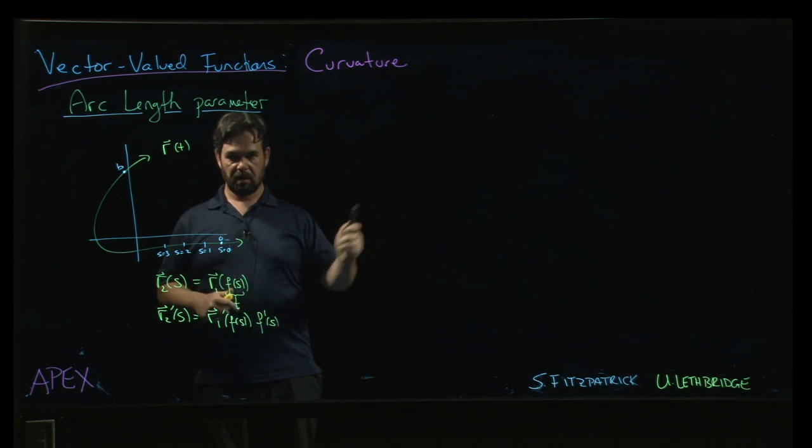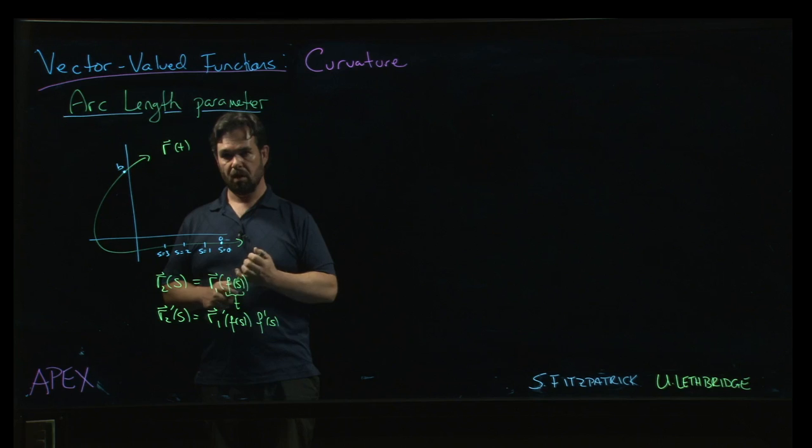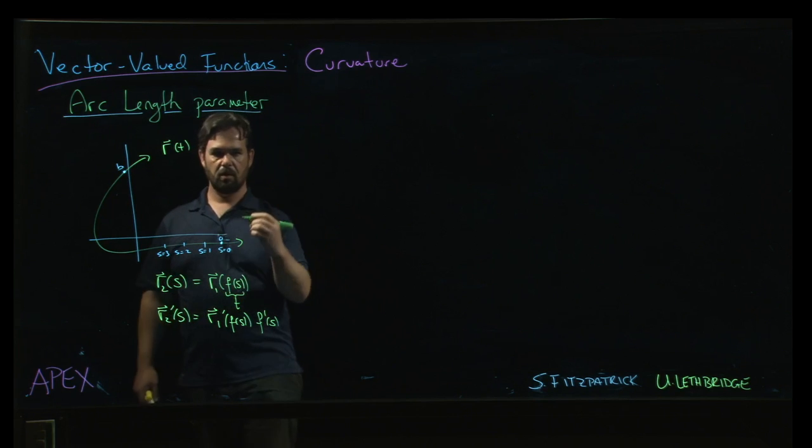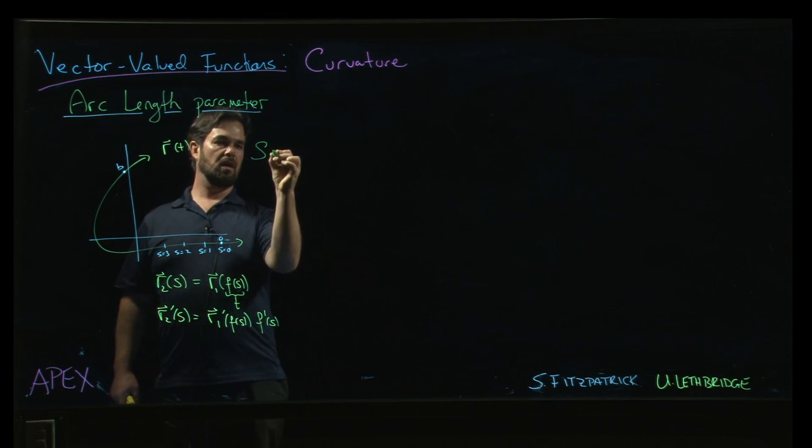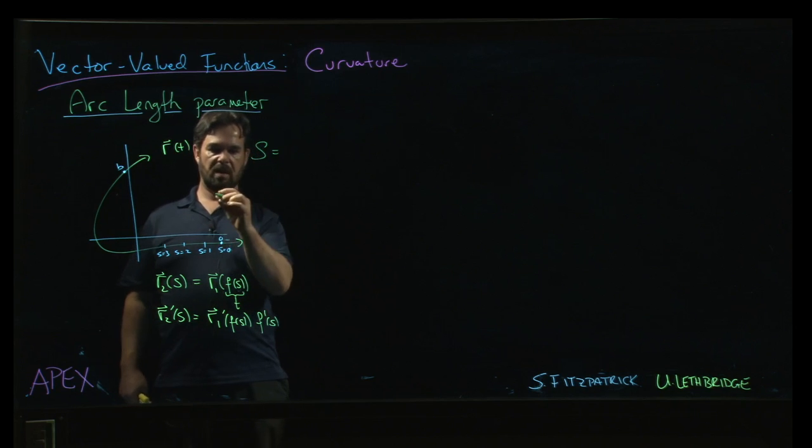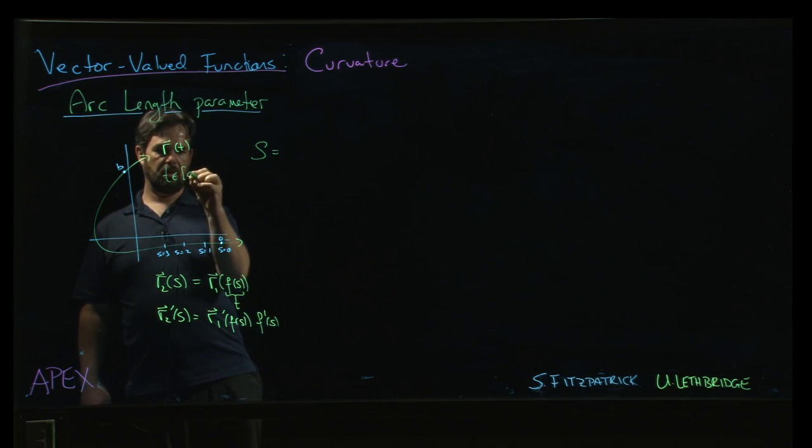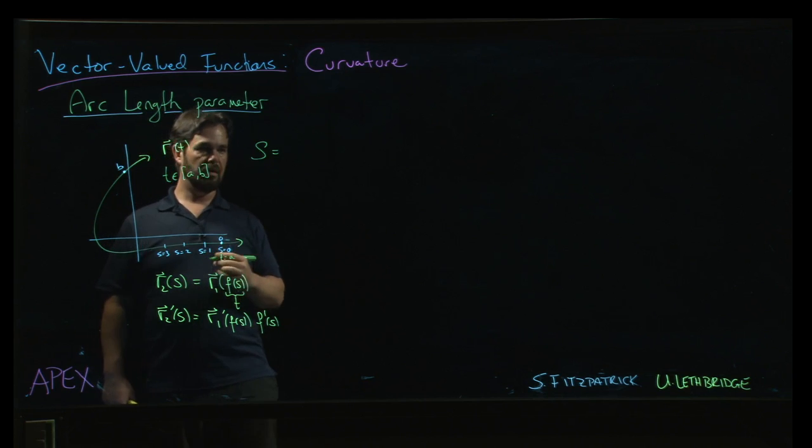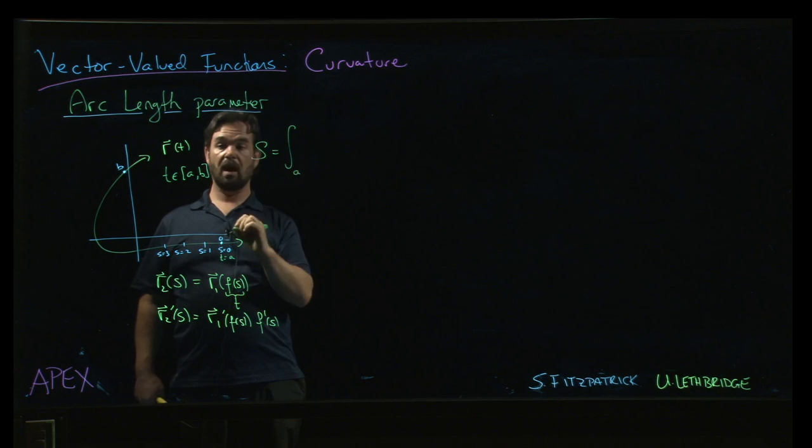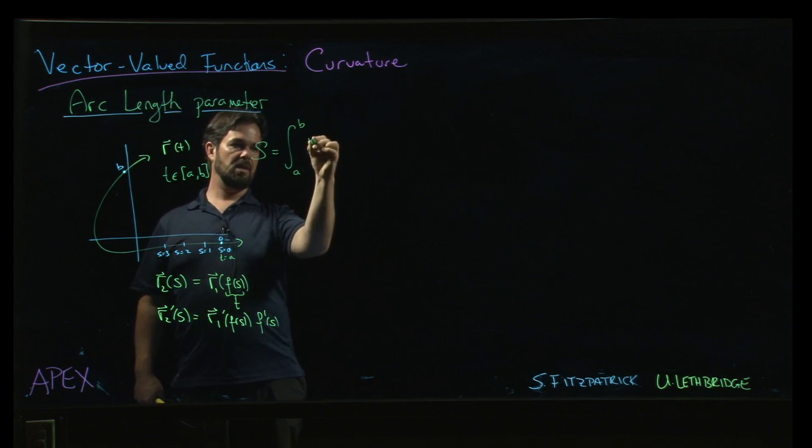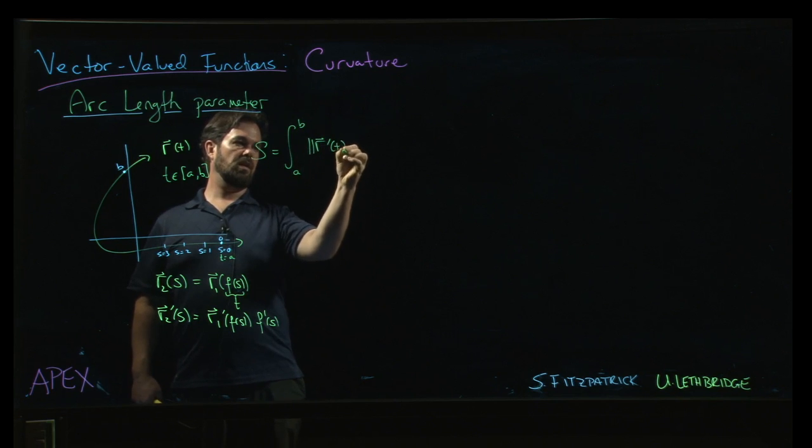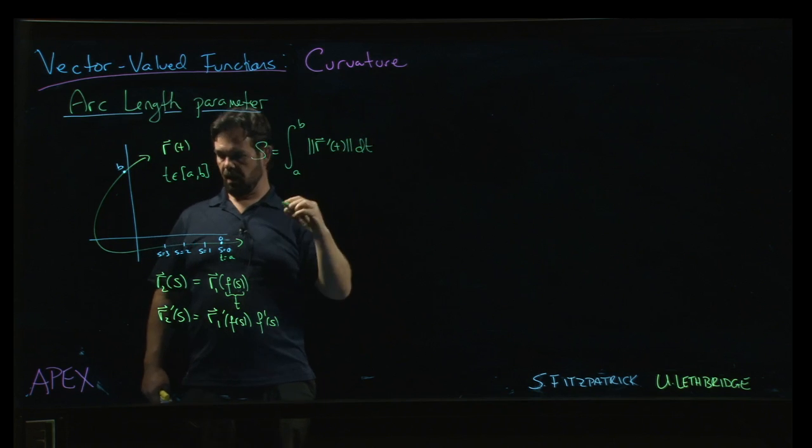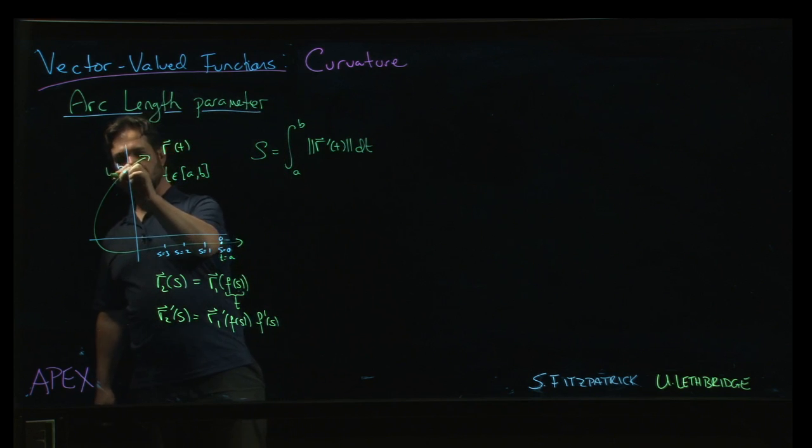First, we need to define it, then we'll look at an example, and then we'll confirm that it has these properties we want it to have. And so the idea is, we know that arc length, typically, if we have r of t and it's given on some—t is from a to b, so that s equals zero might correspond to t equals a. If we wanted the entire arc length, we'd say, okay, well, it's the integral from a to b, and we integrate the magnitude of r prime of t dt. And that would give me the length of the curve from t equals a going all the way to t equals b.